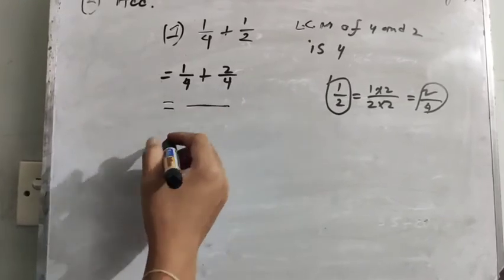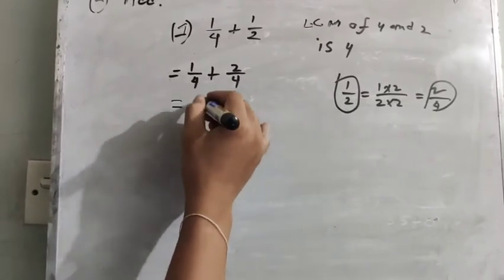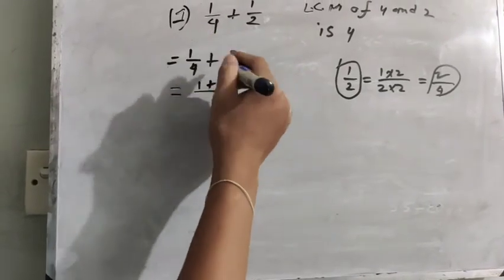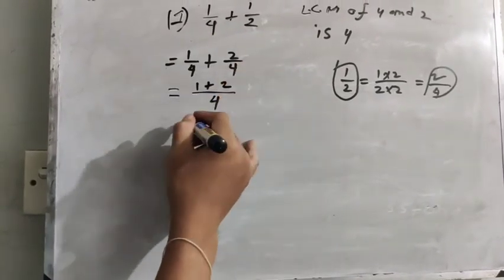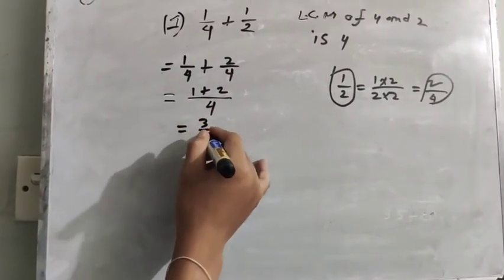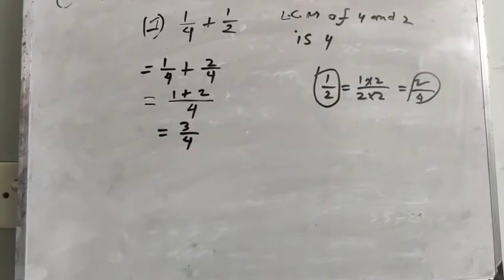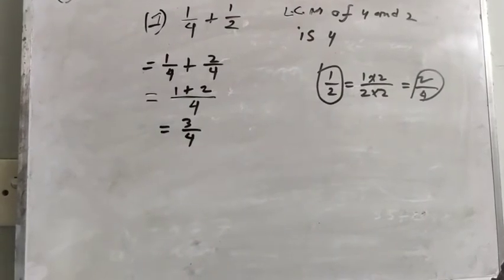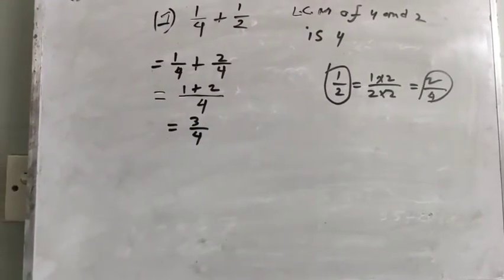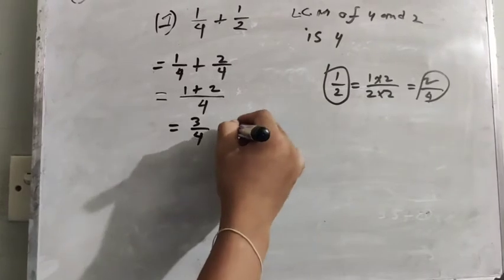So with LCM 4, we have 1 plus 2 equals 3/4. The result is 3/4. Answer.